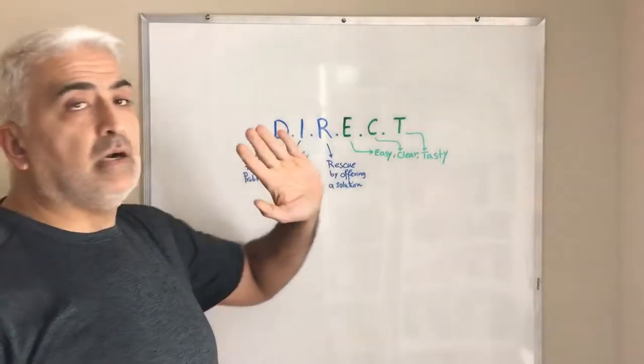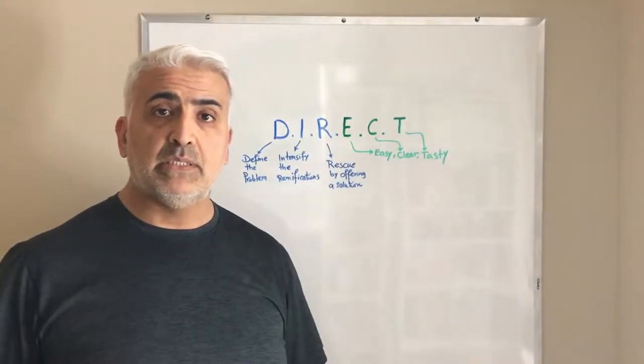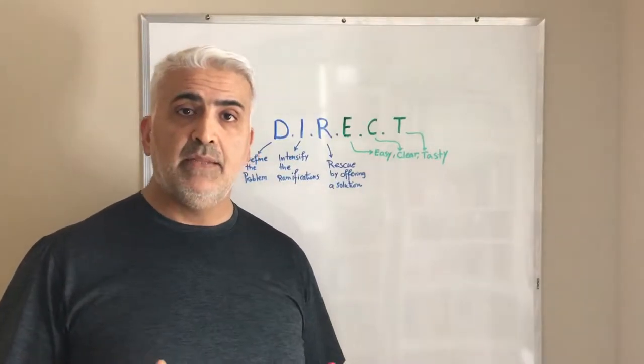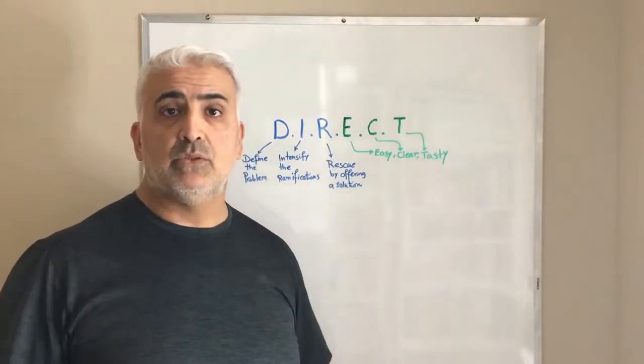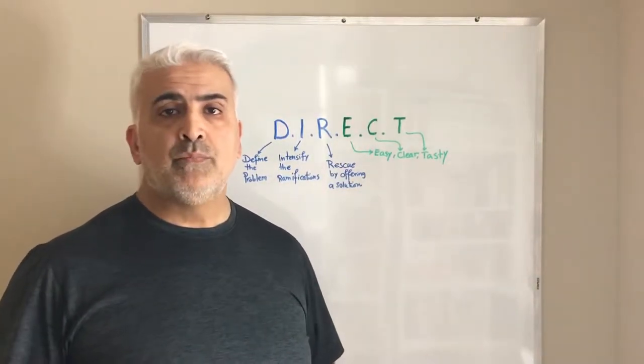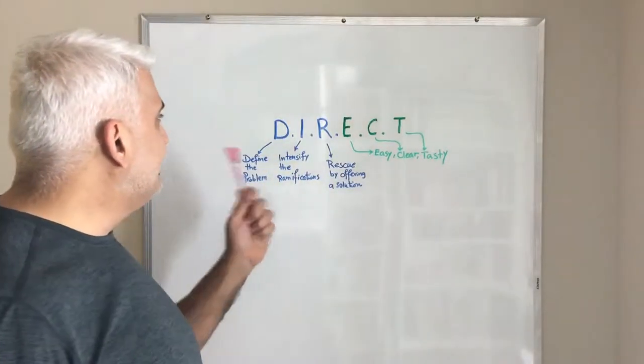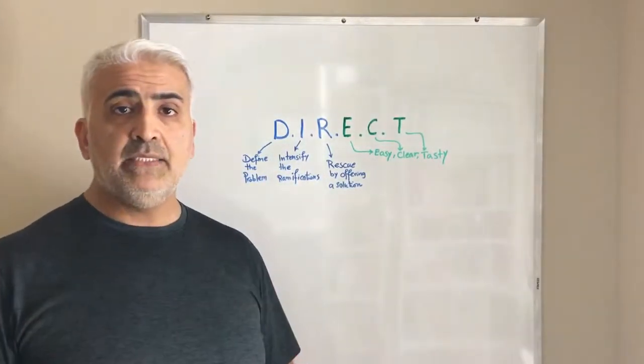DIR-ECT. The DIR part is about the first part, the framing, the problem and decision solution. ECT stands for how you need to make the proposal. D stands for define the problem.